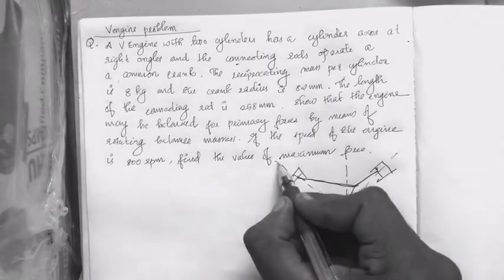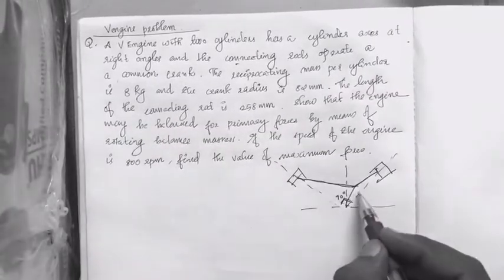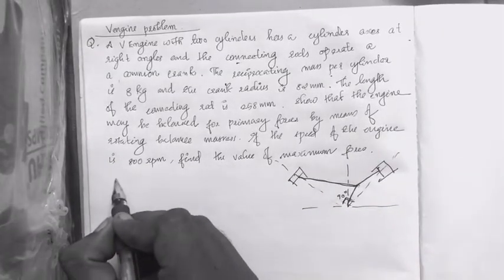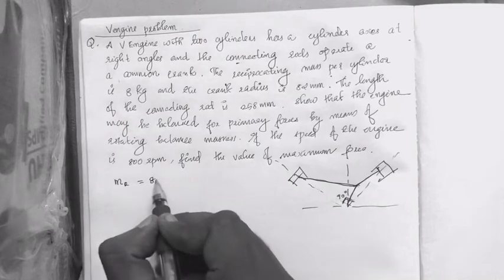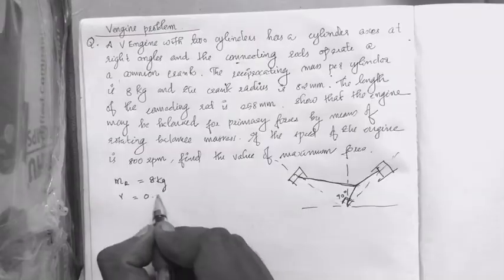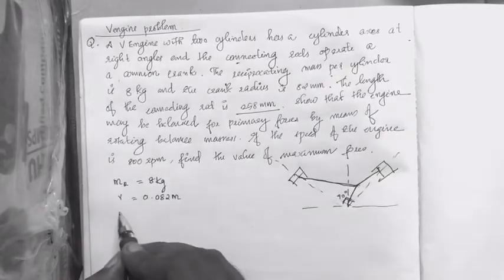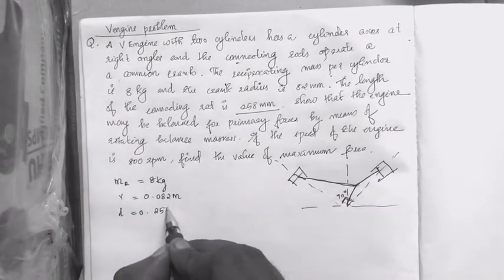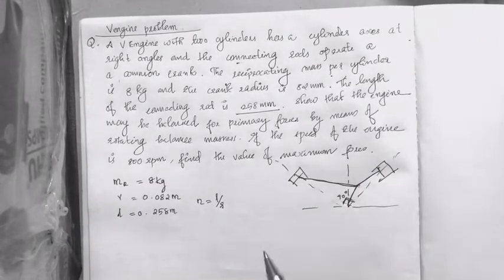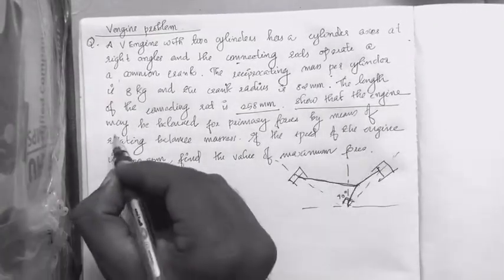The two cylinders have axes at right angles. The connecting rod operates on a common crank — it is a common crank. The reciprocating mass per cylinder M_R is equal to 8 kg. The crank radius R is equal to 0.082 meter. The length of the connecting rod L is equal to 0.258 meter. We can find L by R.